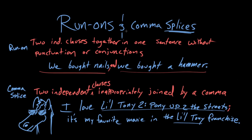The same deal with a comma splice — it's just that a comma splice is a run-on that hasn't been fixed all the way. The comma's being used, but we need some bigger punctuation in place of the comma, something like a semicolon, in order to make a distinction between those two independent clauses. That is how you identify and fix run-ons and comma splices.